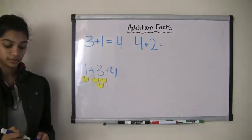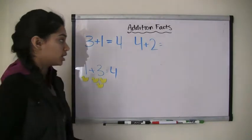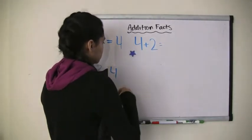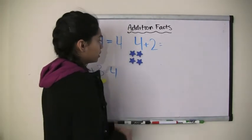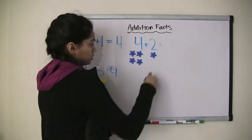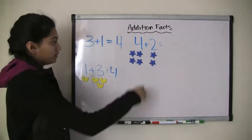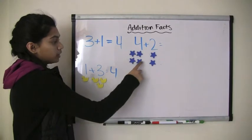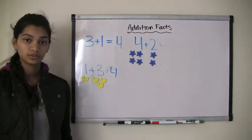Let's say we had 4 plus 2. So now I have 4 stars. 1, 2, 3, 4. And I want to add 2 more. So 1, 2 more. So now, how many stars do I have in total? I have 1, 2, 3, 4, 5, 6 stars in total. So 4 plus 2 equals 6.